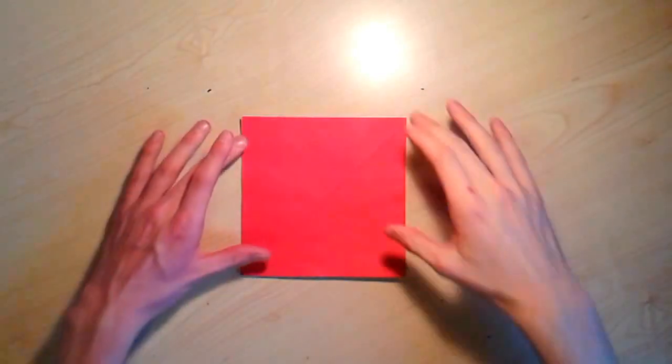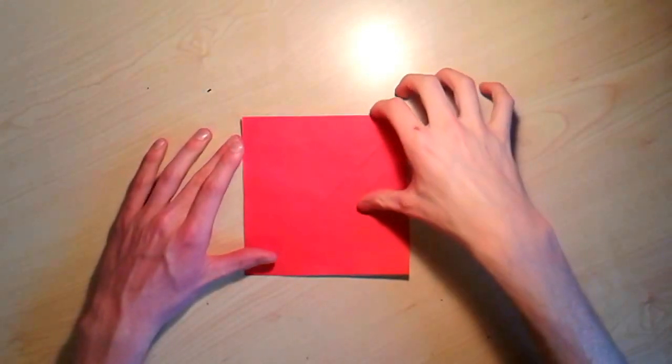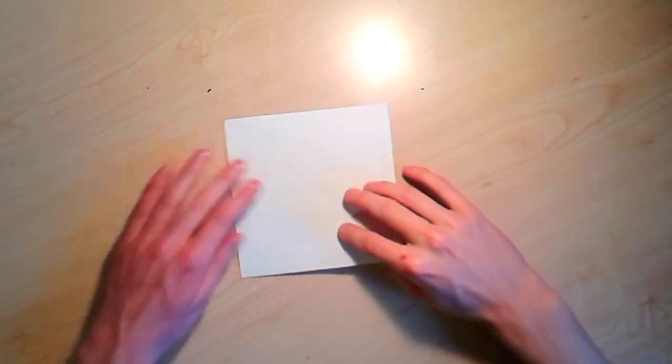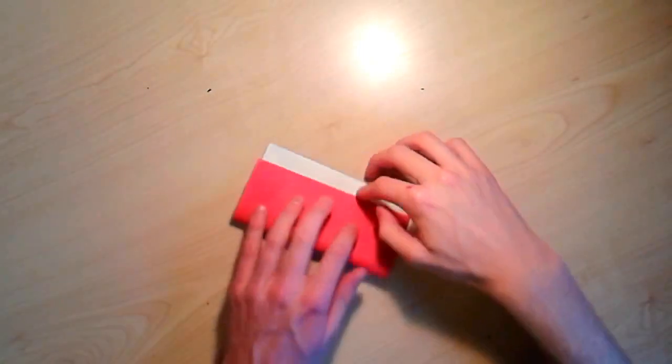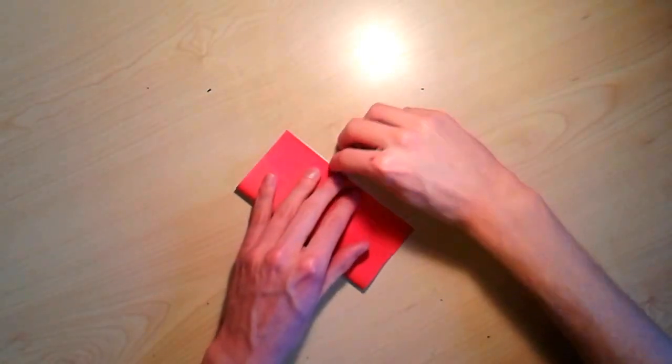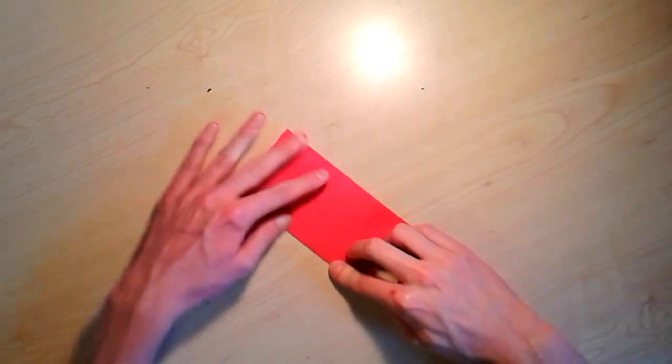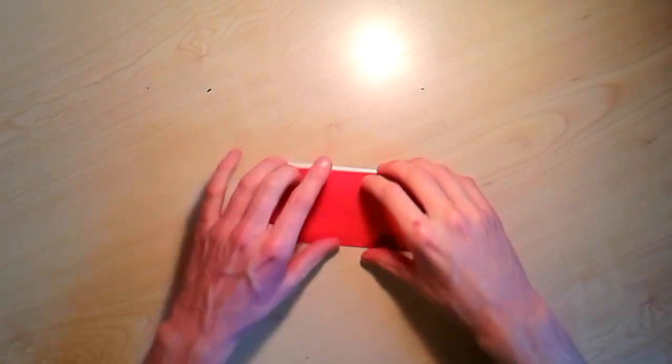Okay, so you want to start with a square piece of paper, red one side, white the other, and you want to fold it in half, like this, and then open.